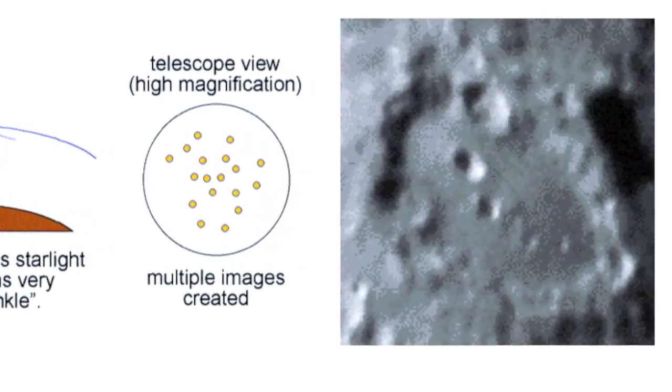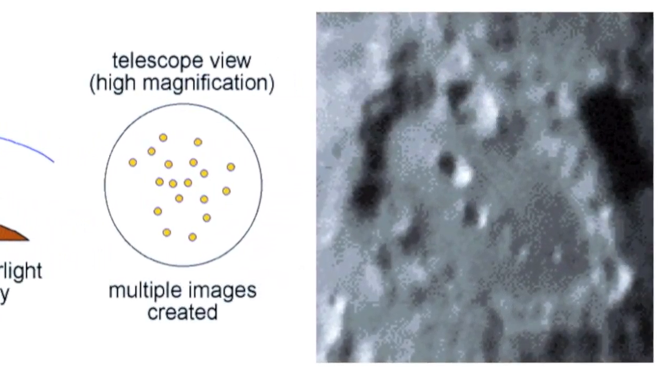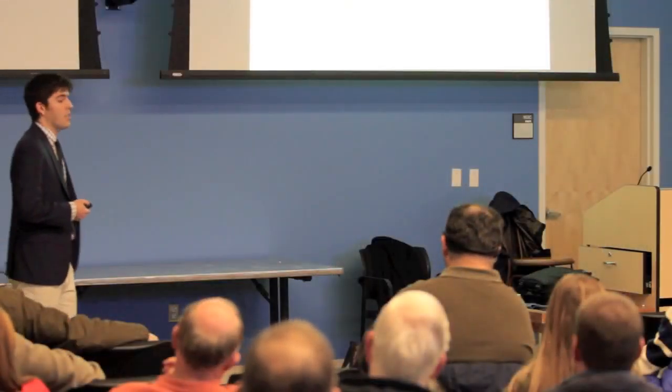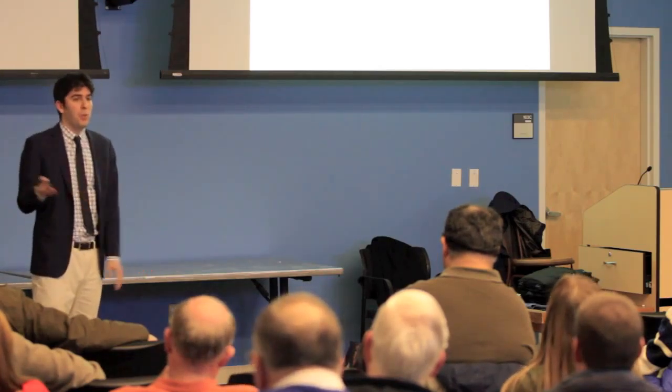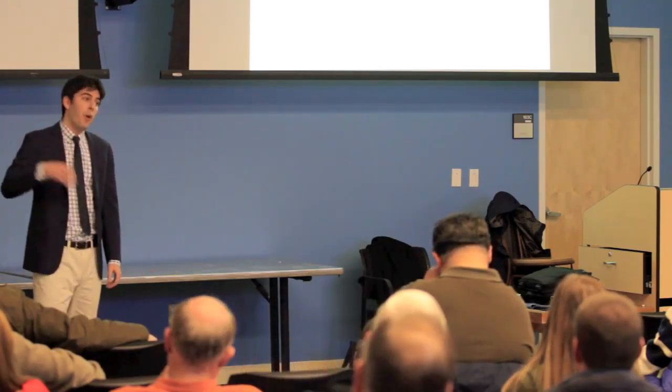Okay, how do we beat seeing? We can go to space. We heard a little bit of an introduction about Hubble. And that's great. You get above the atmosphere. You don't even have to worry about it. Only problem, it's really expensive. And also, when we're going back to lambda over D in terms of resolution, because it's so expensive, your primary mirror has to be small. Hubble is 2.4, 2.5 meters.